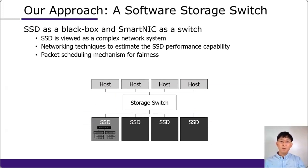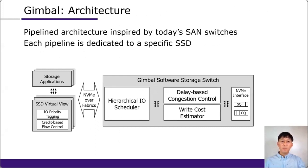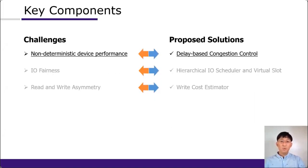We need mechanisms that adapt to both SSD conditions and workload characteristics, and our solution must be lightweight given SmartNIC compute constraints. We take a black-box approach and apply networking techniques: SSD is viewed as a complex network system, and we borrow congestion control and packet scheduling mechanisms from the networking domain with SSD-specific optimizations. We designed a software storage switch, Gimbal, with a pipeline architecture. Each pipeline consists of three major components: a hierarchical I/O scheduler, delay-based congestion control, and write cost estimator. Gimbal also provides each tenant a managed view of the SSD, including credit-based flow control and I/O priority tagging.